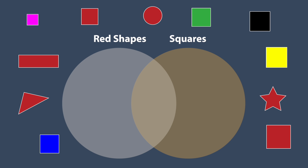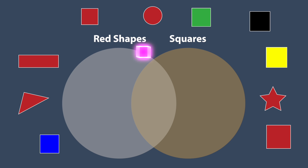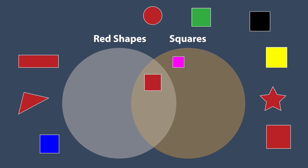We use a Venn Diagram. On the left, we will have red shapes. On the right, we will have squares. The overlapping part will have red squares. This square is not red, so it goes in the right circle with the squares. This is a square that is also red, so it goes in the overlapping section.